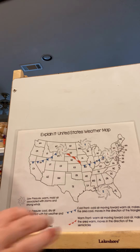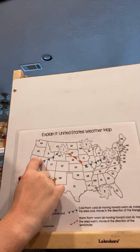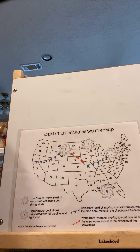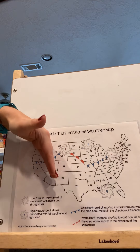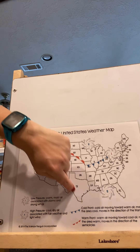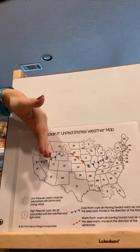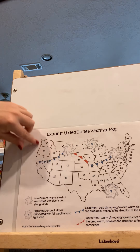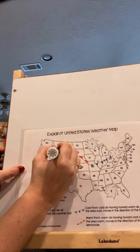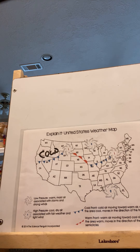A cold front is pretty much what it says. It is this blue line with blue triangles. The triangles face the direction that it is moving — pointing to where it's going. It has cold air behind it, and as the front moves, it brings that cold air with it.